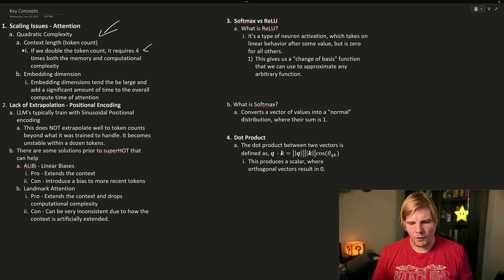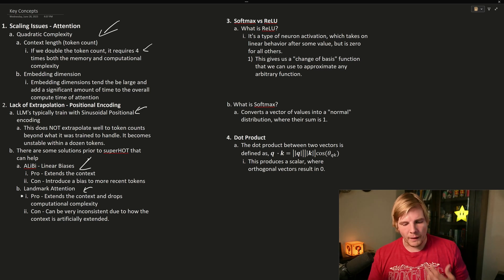We also have a lack of extrapolation in our positional encoding. If you would like to learn more about positional encoding, check out our video about it. LLMs that have been trained with sinusoidal positional encoding have a lot of trouble extrapolating the next tokens beyond what it was trained to understand. There are some techniques that have existed before Superhot, specifically Alibi and Landmark, where Landmark did let us extend the context in a simulated way, but it was very unreliable with how it relied on embeddings. Alibi was perhaps more successful, but it did introduce a bias where earlier tokens were not as heavily regarded as later tokens.